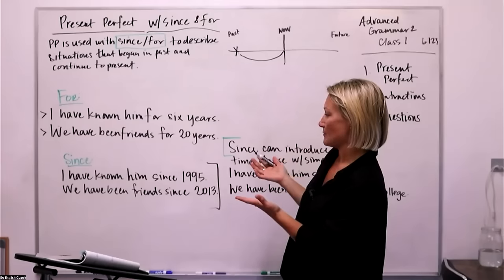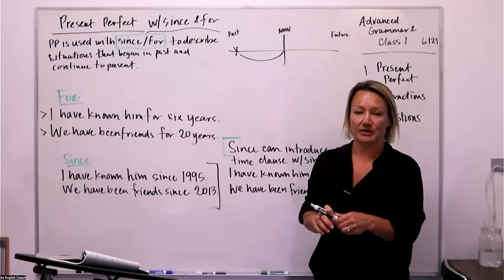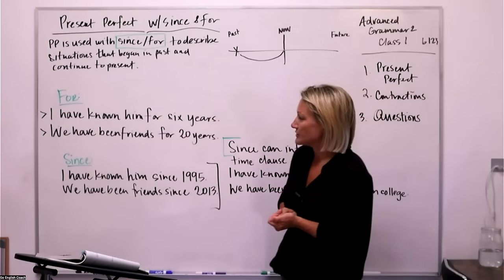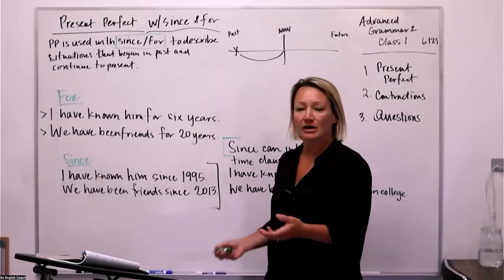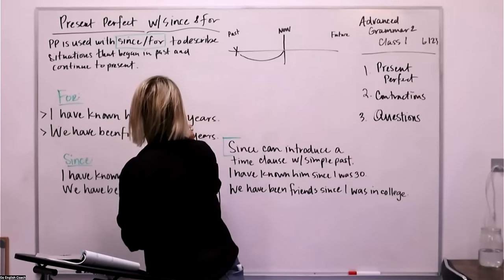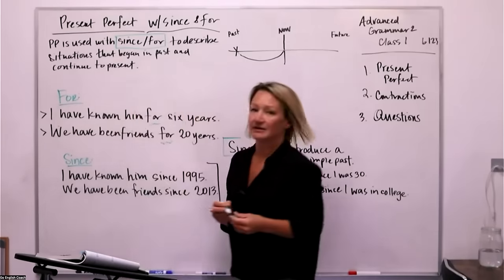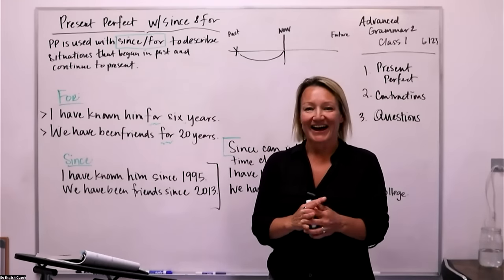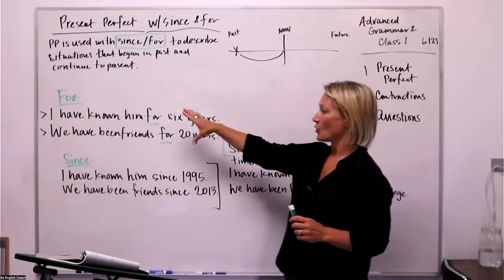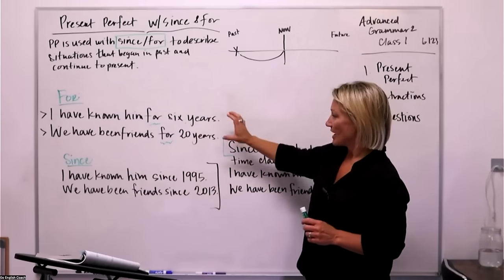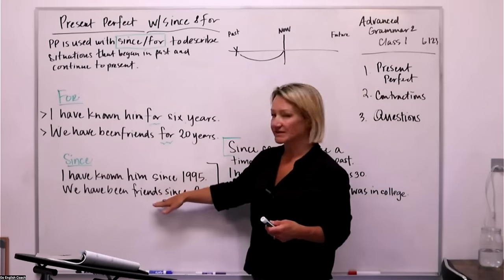So let's look at some examples. We've got two examples with 'for' and two examples with 'since.' When we discuss things using 'for' and 'since,' there are different circumstances for when we can use each one. Let's look at the two examples we have here with 'since.'